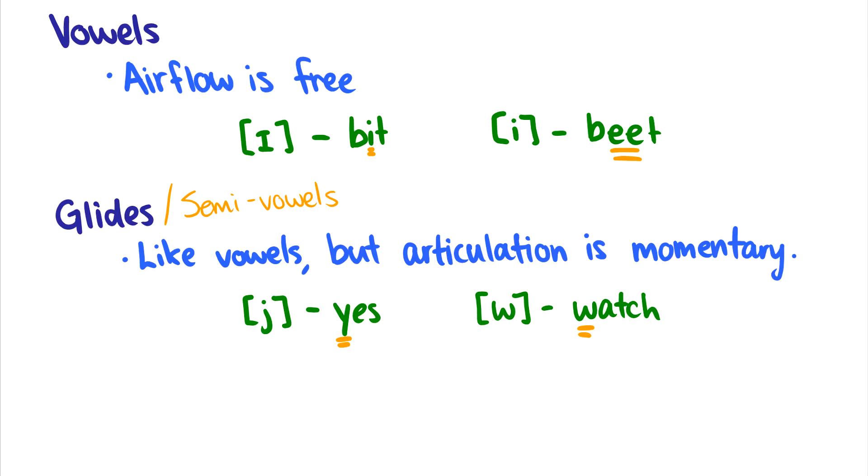So the three classes of sounds we could say are consonants, vowels, and glides. Consonants on the very left, vowels on the very right, and then glides are somewhere in between them. Some properties of consonants, some properties of vowels, and that's why we call them a semi-vowel.